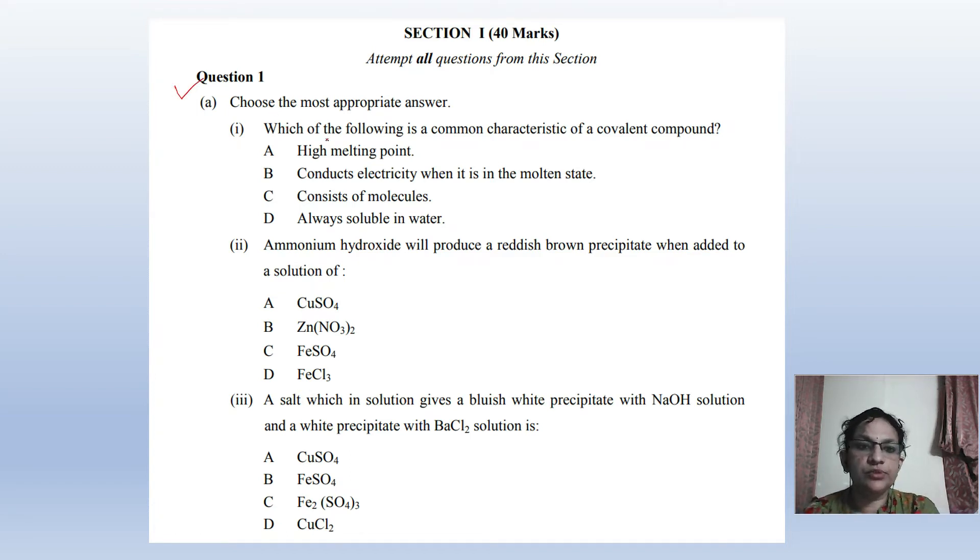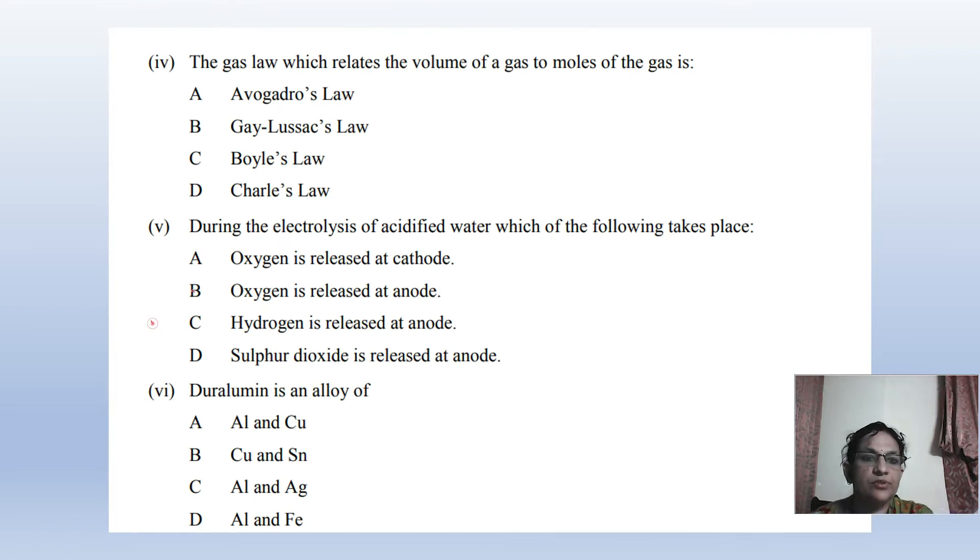Here you have MCQ on covalent bond characteristics like high melting point. Questions will ask about reaction products and their colors - you have to remember copper sulphate is blue and iron sulphate is green. Blue color compound with copper sulphate with 5H2O is called blue vitriol. There's also Avogadro's number question.